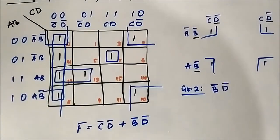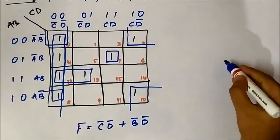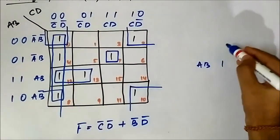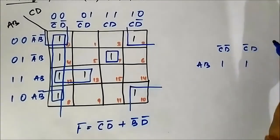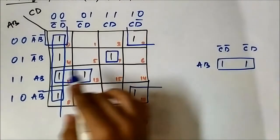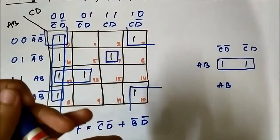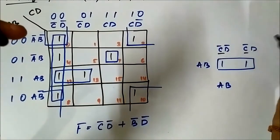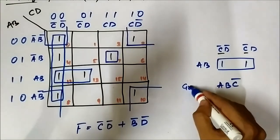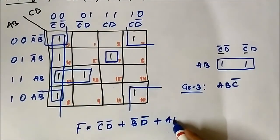Now only one pair and one single-cell group remain. For this pair (cells 12 and 13): the horizontal variable is a, b — a, b is common in both cells. The vertical variables are c bar, d bar and c bar, d — c bar is common in both. So for this third group, which is a pair, a, b, c bar is the common set of variables.